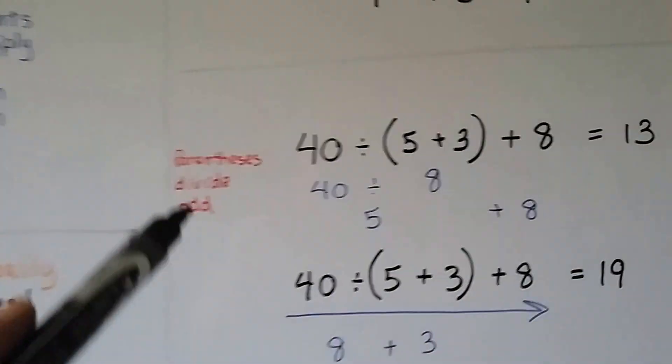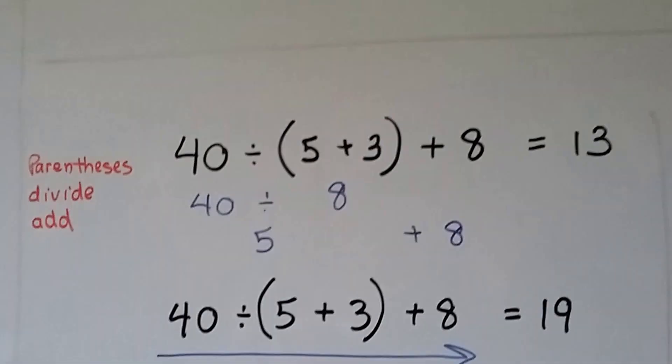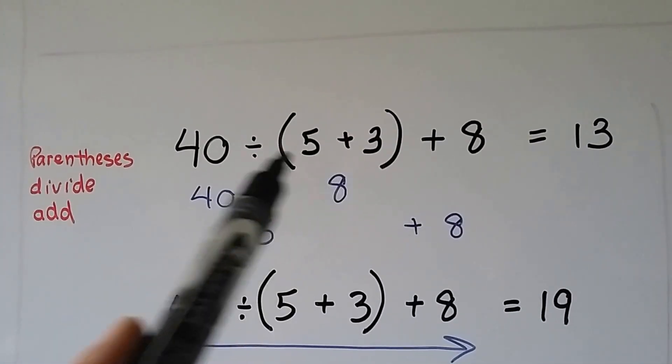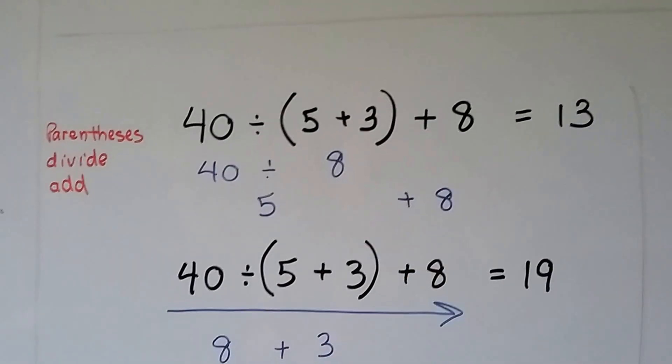In this one, we're going to do the parentheses, then divide, then add. So we're going to start here, go back this way, and then go back that way. We're going to do 5 plus 3 is 8. 40 divided by 8 is a 5. Now we add this 8, and we get a 13.